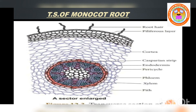The root hair helps in absorption of water and mineral salts from the soil. This layer also protects the inner tissue. The major function of epiblema or rhizodermis is protection. The major function of root hair is absorption of water and minerals from the soil.